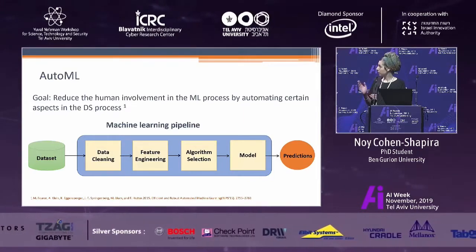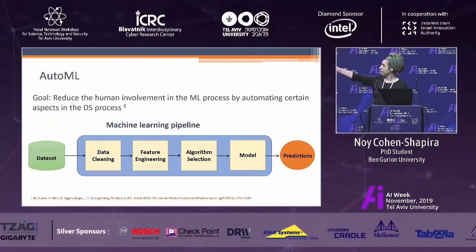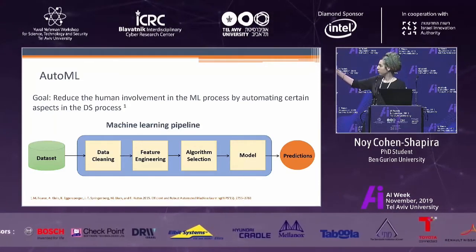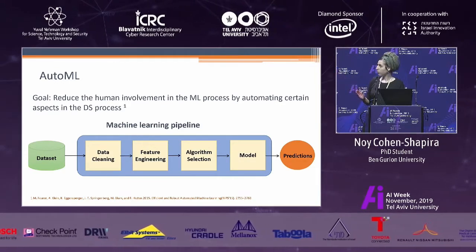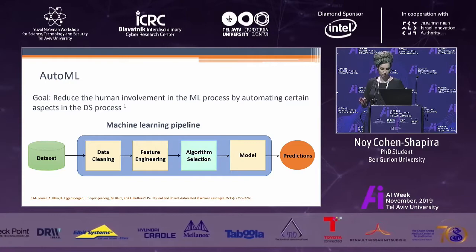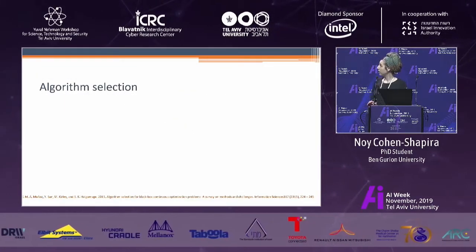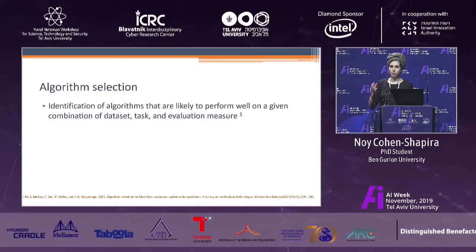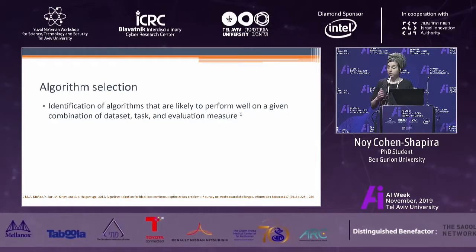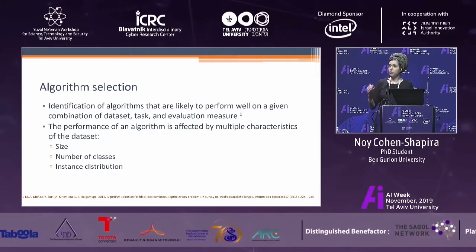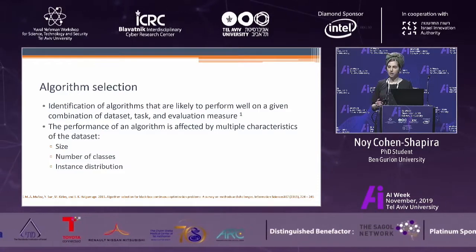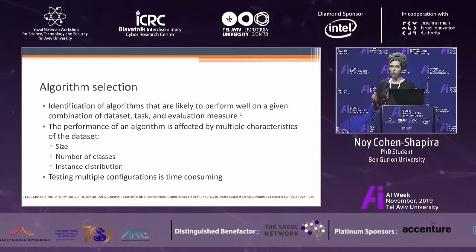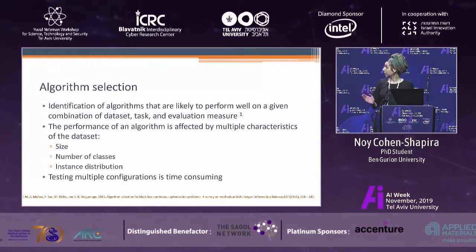As you probably know, the machine learning pipeline can be described as follows: the input dataset is cleaned, features are extracted, and at this point we select an appropriate algorithm to generate a model which produces predictions. Today I want to focus on the algorithm selection phase. Algorithm selection is the identification of algorithms likely to perform well on a given combination of dataset, task, and evaluation measure. It is difficult since algorithm performance is affected by multiple data characteristics, and testing multiple configurations is time-consuming. So there is a need to automate this process.